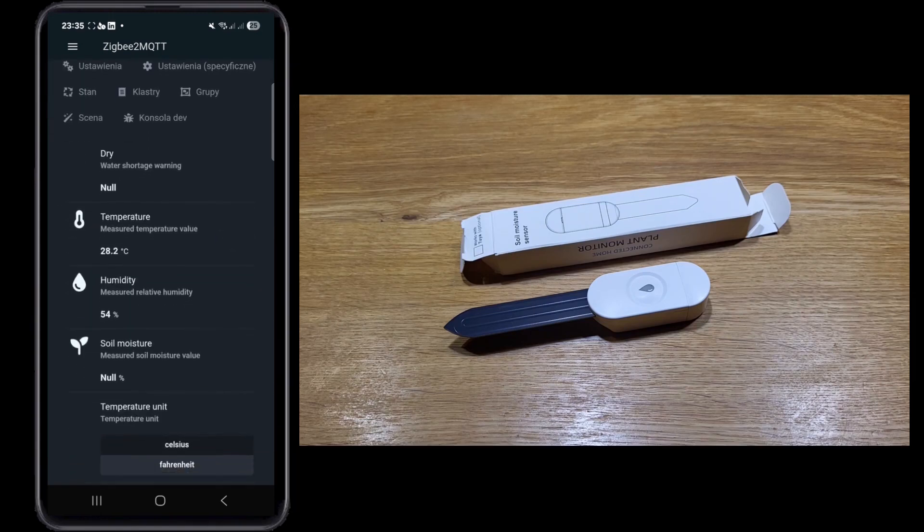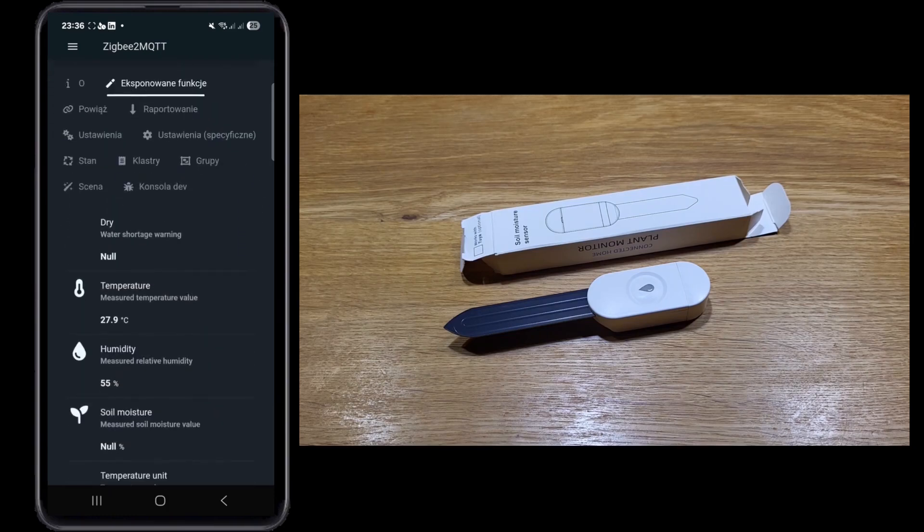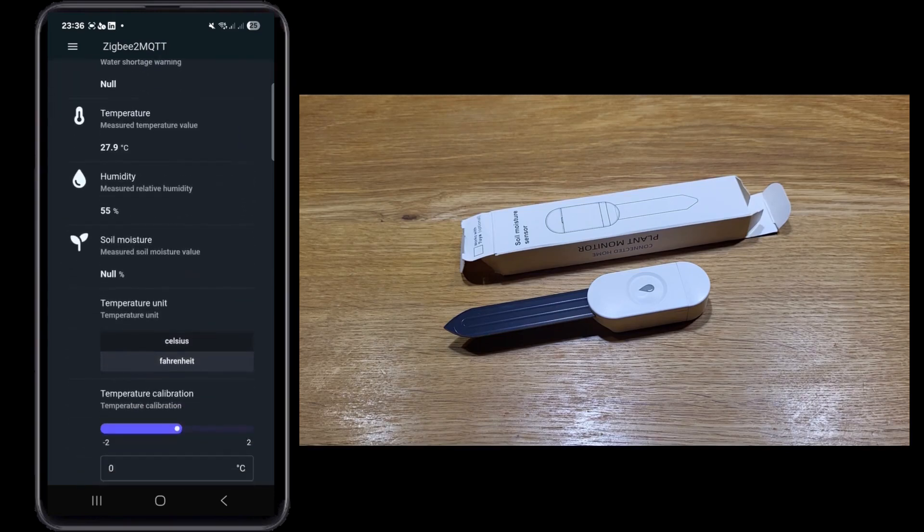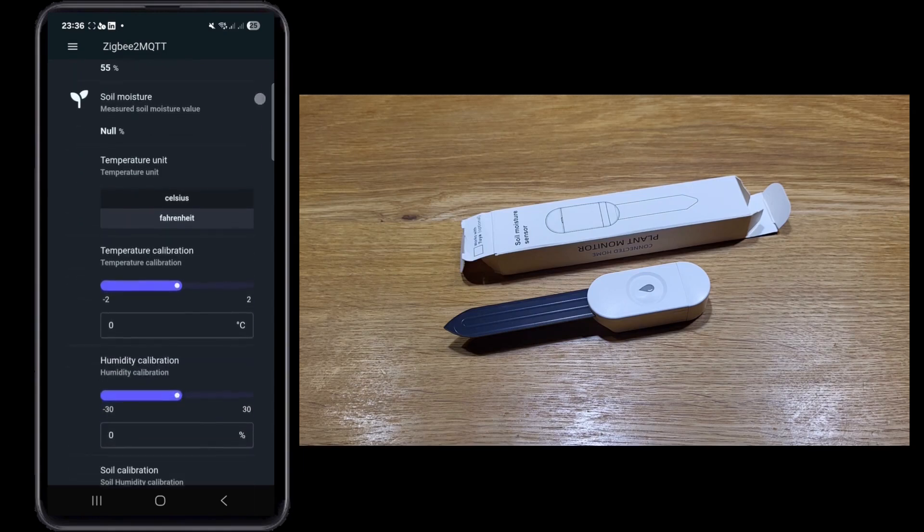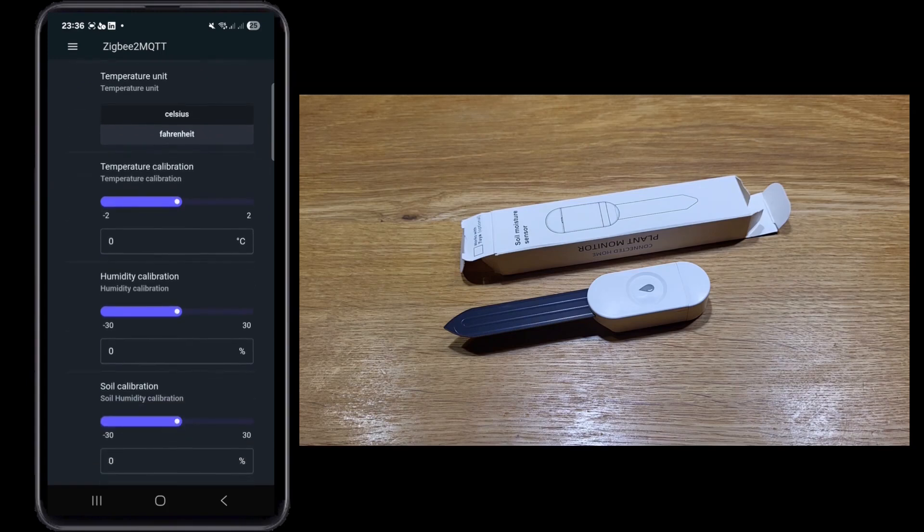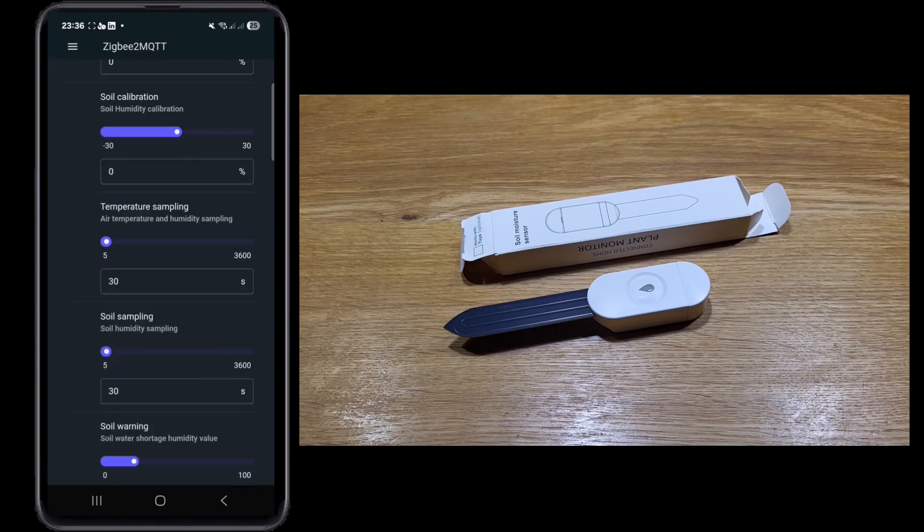What does it expose? Humidity, soil moisture - there is nothing - and then temperature. I'm not sure why 28, I assume the temperature is above the sensor or nearby. Generally that's it. We can see water shortage, temperature, humidity, soil moisture. I think when we're gonna put it to the pot then we're gonna see it.